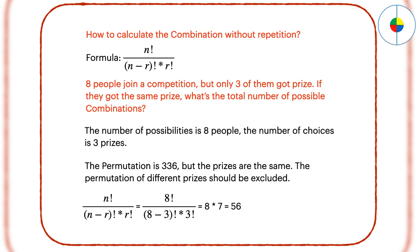To calculate the combination without repetition, here is the formula. For example, 8 people join a competition, but only 3 of them got prize. If all the prizes are the same, since 1 person can only get 1 prize, this is a combination without repetition. The combination will be 56.